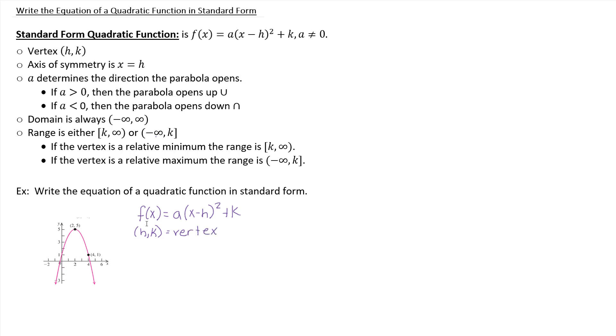And then also we know that x comma f of x is any point on the graph. So it's just any point. And then a tells us generally how the graph opens. Does it open up? Does it open down? It opens up if it's positive. It opens down if it's negative.